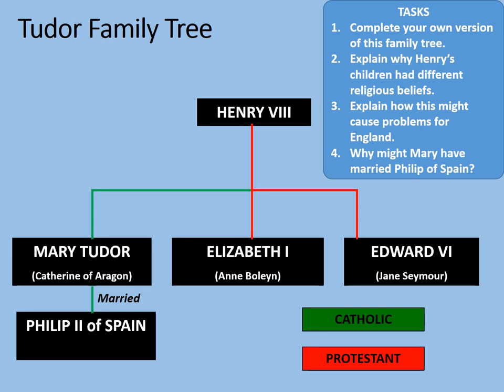Why might Mary have married Philip of Spain? She wanted to secure an alliance with the most powerful Catholic country in Europe and secure a Catholic line going forward. In the event, she never had any children with him, and that attempt failed. But that didn't stop Philip II wanting to have designs on England and taking over if he could.